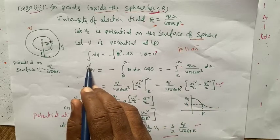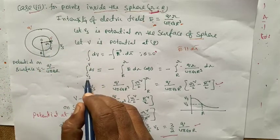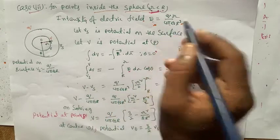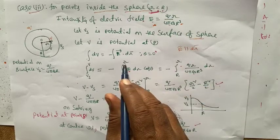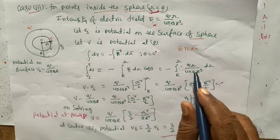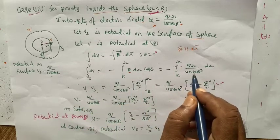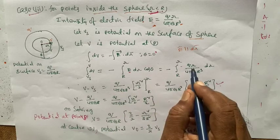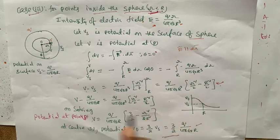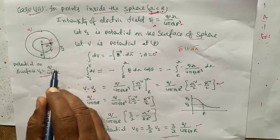Integrating V to Vs: dV equals minus E dr. Substituting the formula for E as Q times r divided by 4 pi epsilon R cubed, with limits from capital R to small r. After integration: V minus Vs equals Q divided by 4 pi epsilon R cubed, multiplied by small r squared over 2, evaluated from capital R to small r. The potential on the surface, Vs, equals Q divided by 4 pi epsilon capital R.